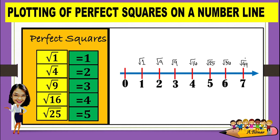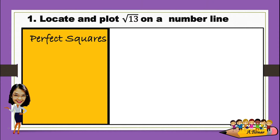Now, what if the given are non-perfect squares? For example, the square root of 2. If we use this number line, we can clearly say that the square root of 2 is beside the square root of 1, and the square root of 3 is beside the square root of 2. So let us try this one: locate and plot the square root of 13 on a number line.